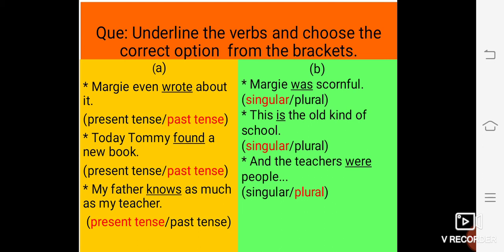Margie was scornful. The verb is was. And, you have to choose now, whether it belongs to singular or plural. The verb is underlined here, and answer from the bracket, that is, whether it is singular or plural, is given in the red text. So, Margie was scornful. The verb underlined, and it is singular.